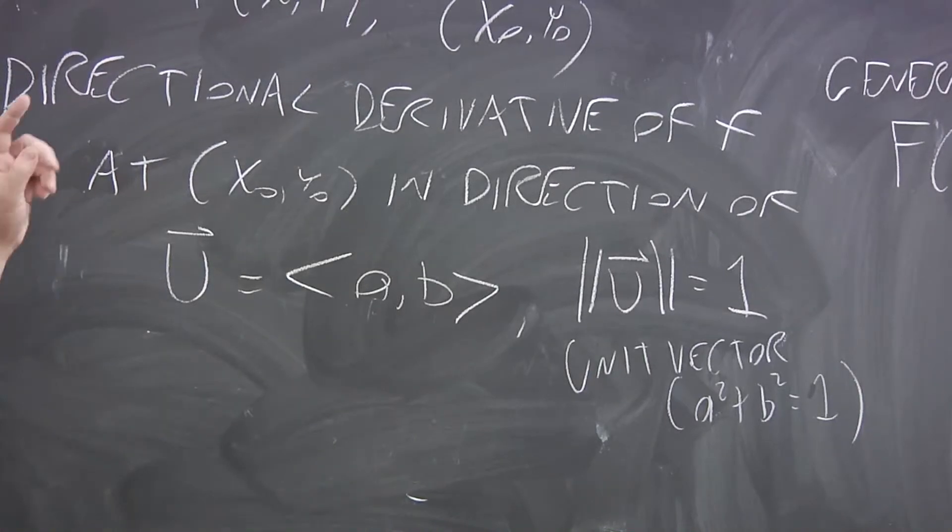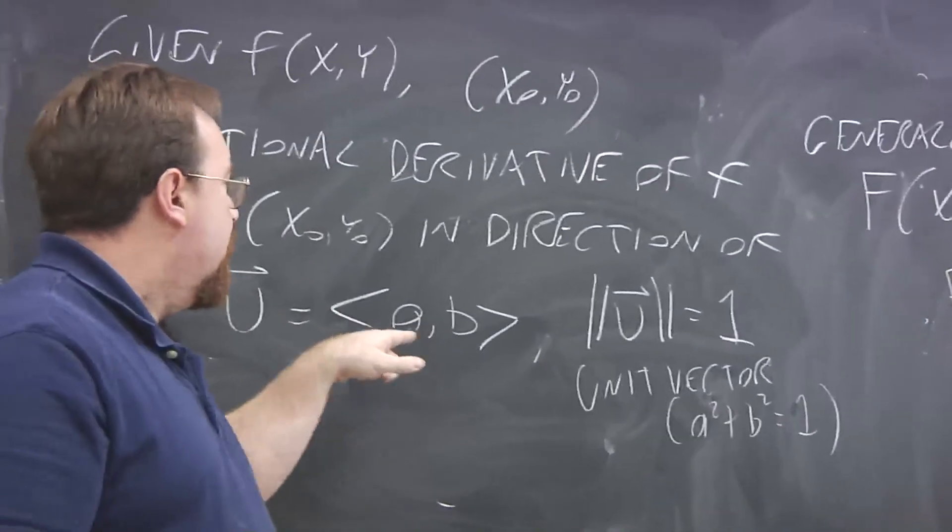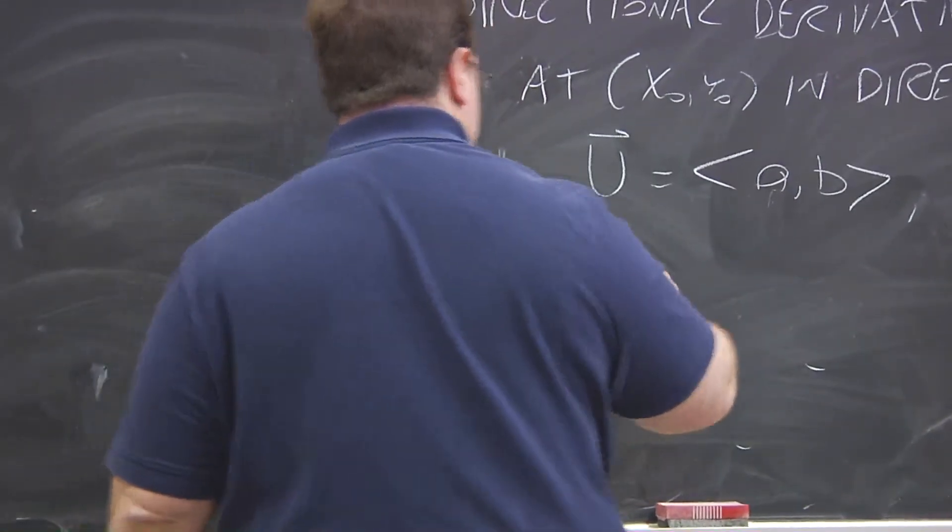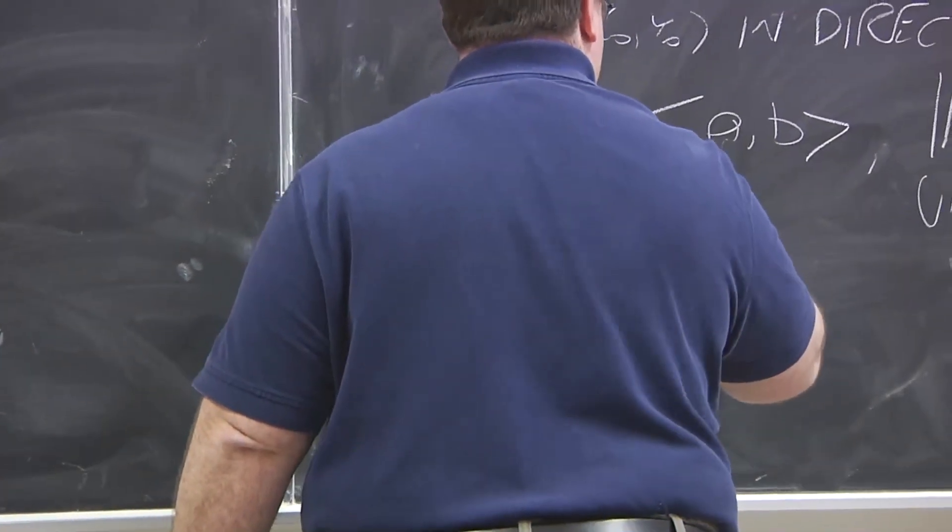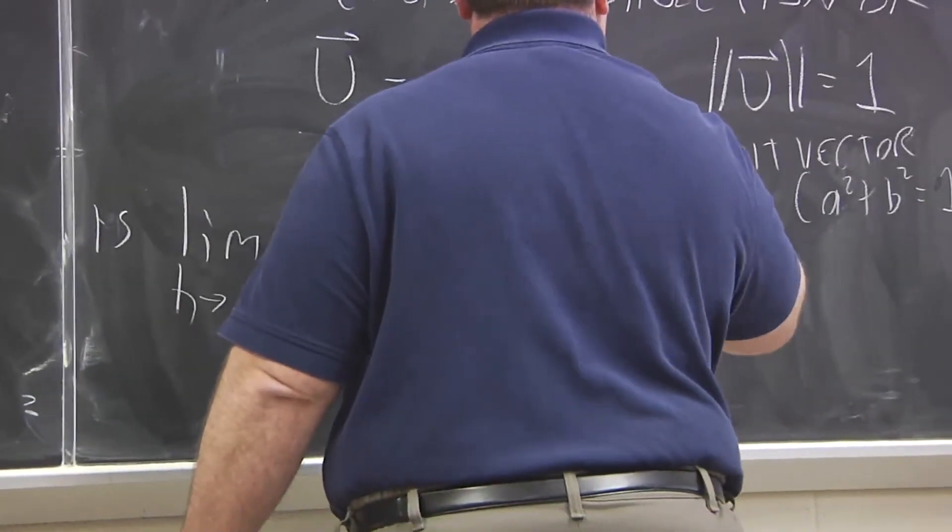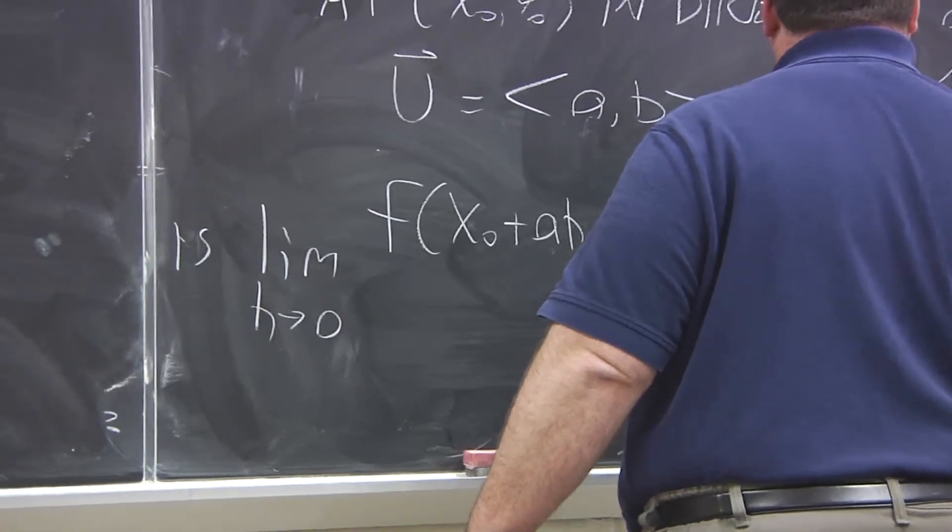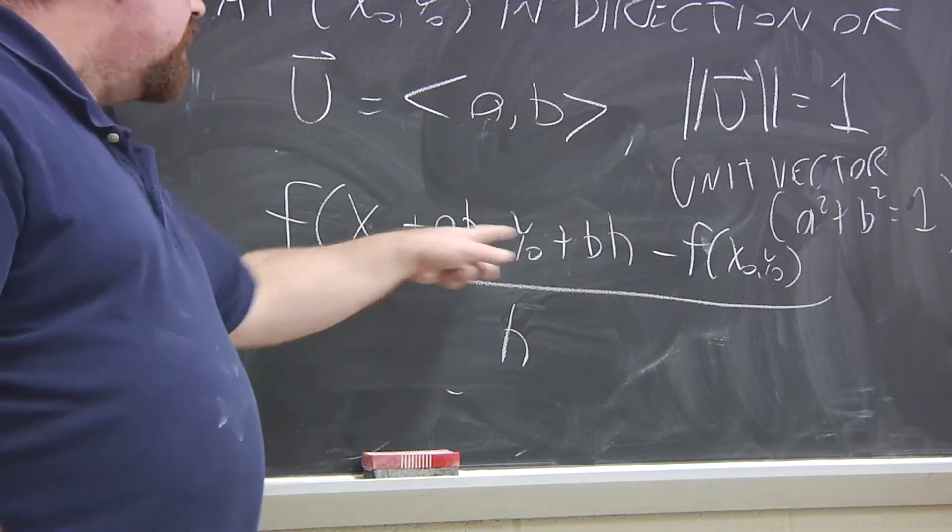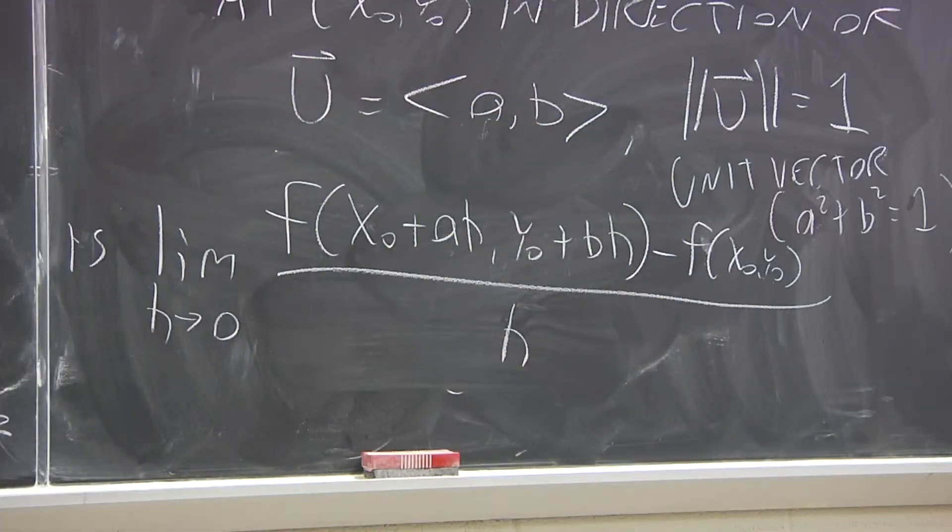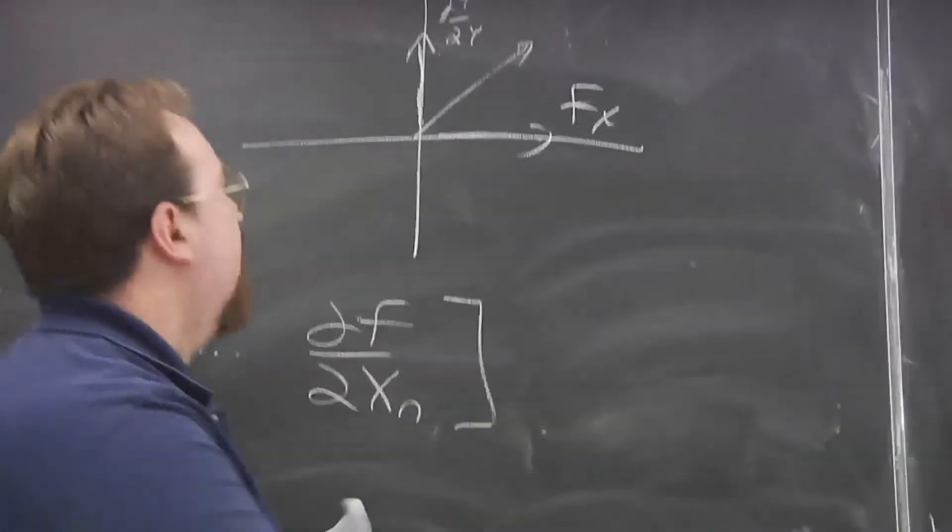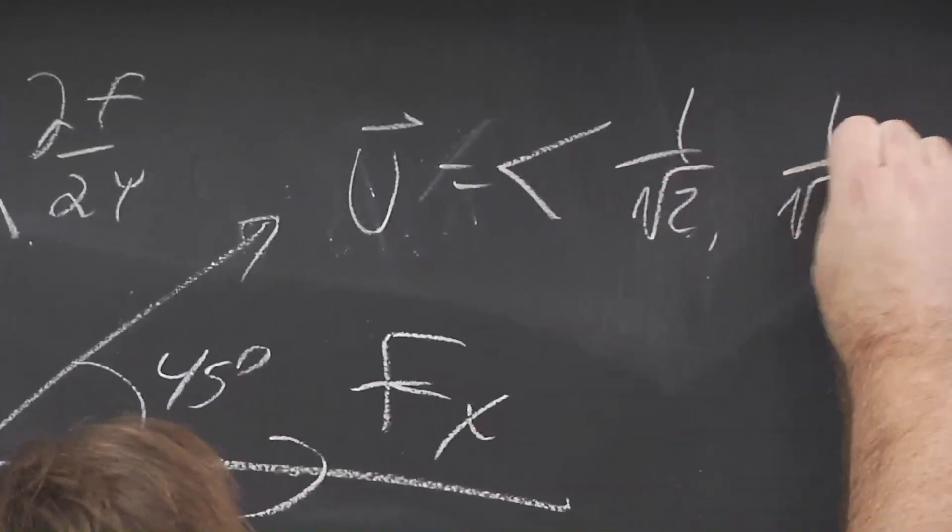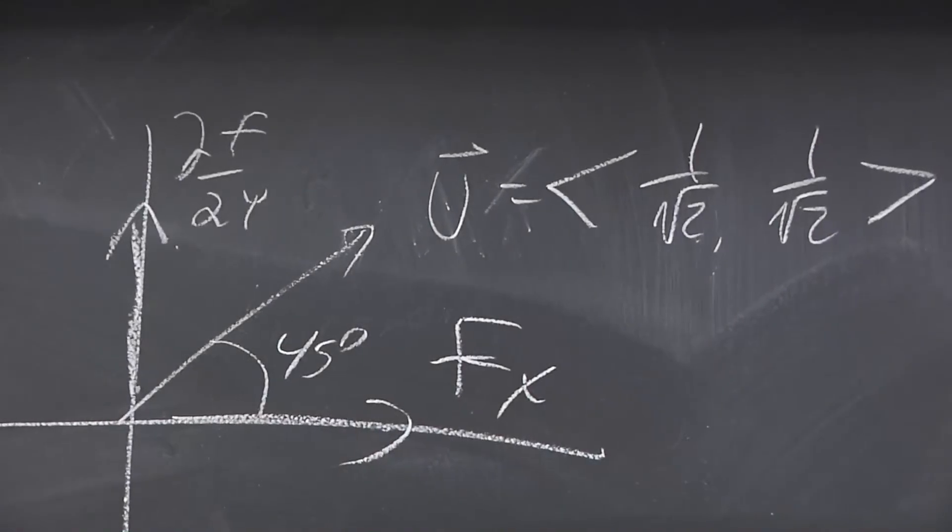So, the rate change of a function at this point as x and y change along this direction is given by this limit which is similar to how we define the partial derivatives. So, we take f of x naught plus a h because a is the x component, y naught plus b h, minus f of x naught y naught, all over h. So, normally with partial derivatives we only change one of the variables and see how a function changes. But now, we have a certain amount of change for all variables. So, if we have x and y changing along this direction, say if this is a 45 degree angle, in this case, u would be the vector 1 over the square root of 2, 1 over the square root of 2. So, we want the directional derivative in that direction.